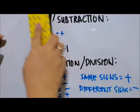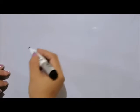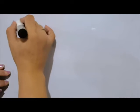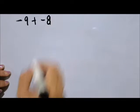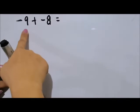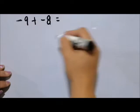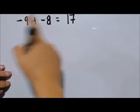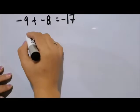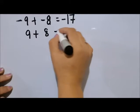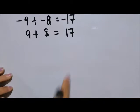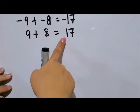Let's do an example. Negative 9 plus negative 8: same signs, we add — 9 plus 8 is 17 — and the sign is negative, so the answer is negative 17. Next, 9 plus 8: positive plus positive, we add, so the answer is 17, and the sign is positive.